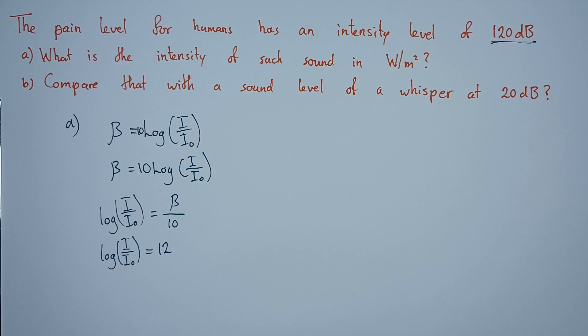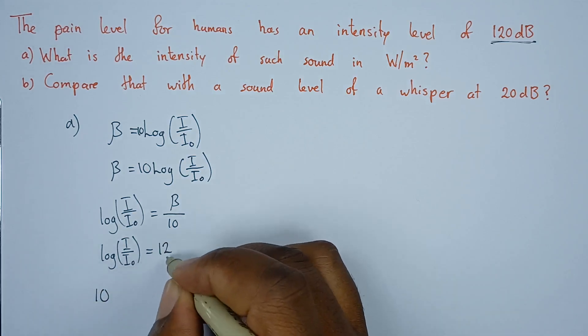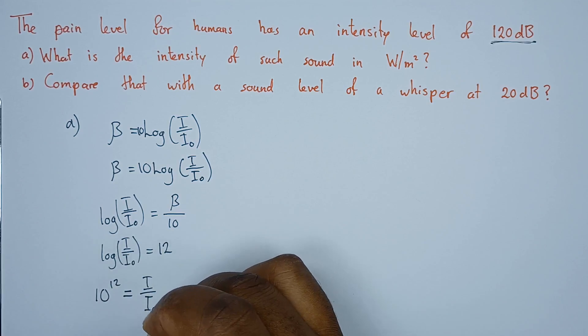This logarithm has a base of 10. The base of the logarithm, which is 10, then this will become 10 to the power 12, and all this equals the argument, which is I over I naught.